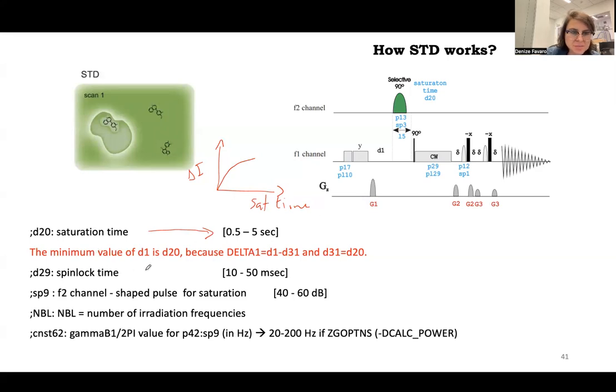The spin D9 is the spin lock time. Usually it's from 10 to 50 milliseconds. So you leave the saturation to spread. This is the shape pulse for saturation. So this is the power related to this pulse. We use the standard 50 millisecond duration.